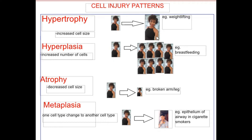With hyperplasia, I have one cell here, then look, it changes to a bunch of cells. An example is when you breastfeed. Number three is atrophy — that's a decrease in cell size. I have this picture here and look, it gets smaller.